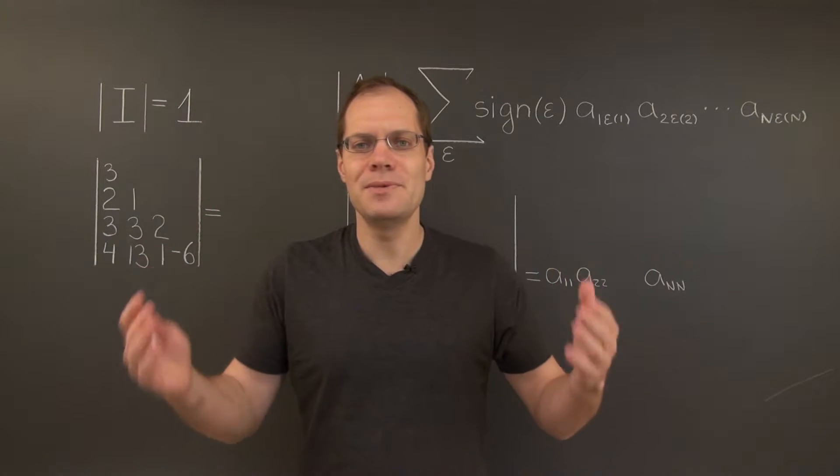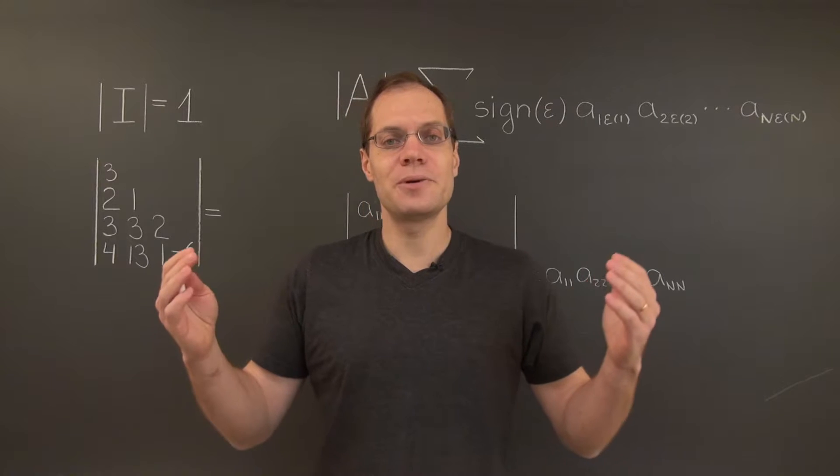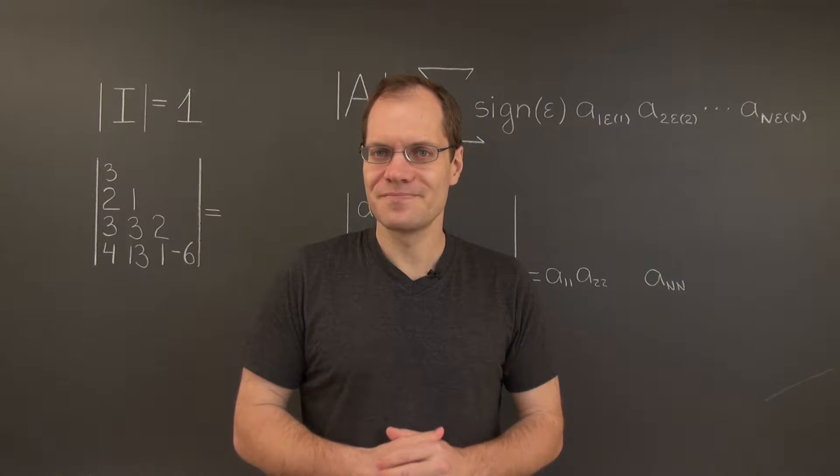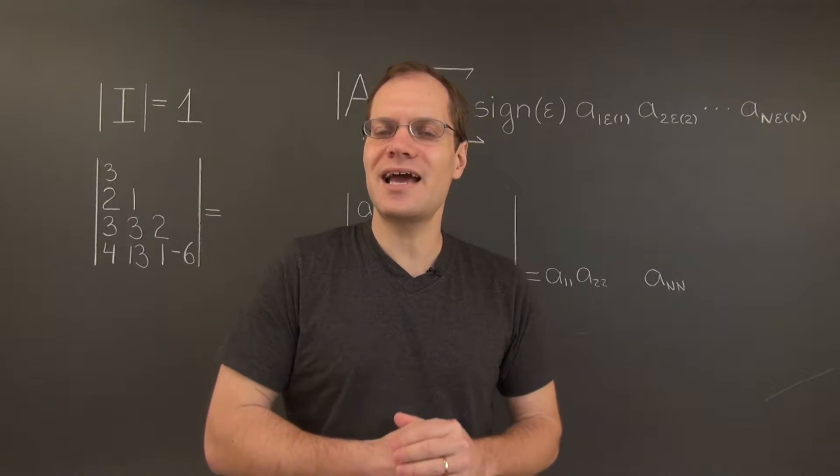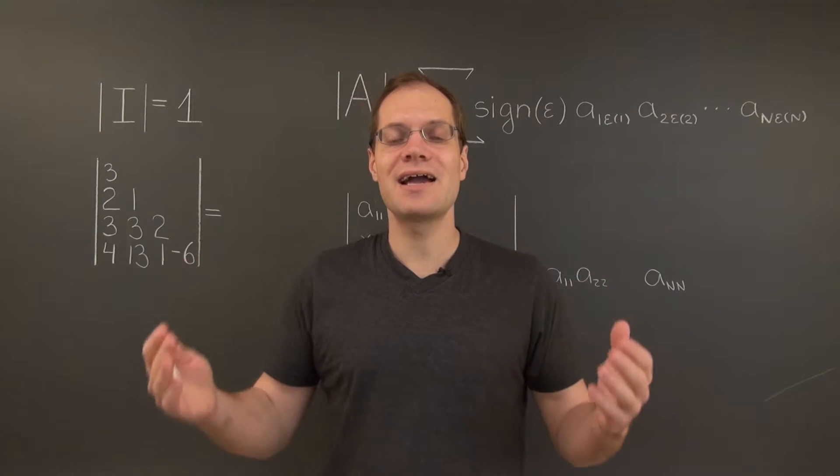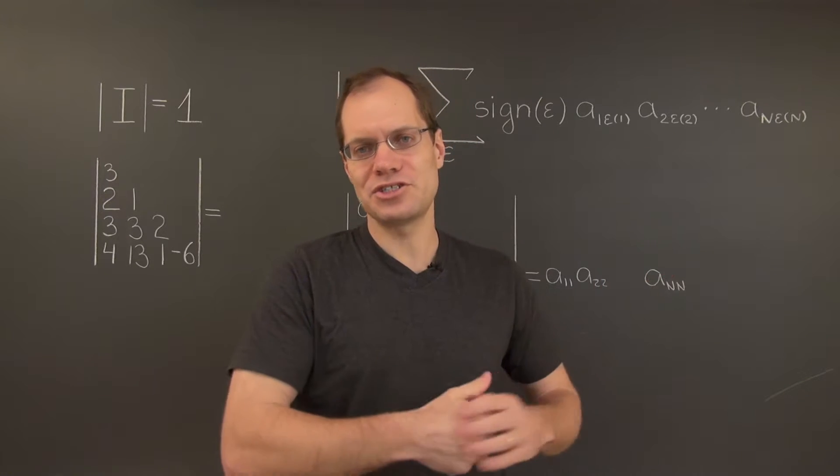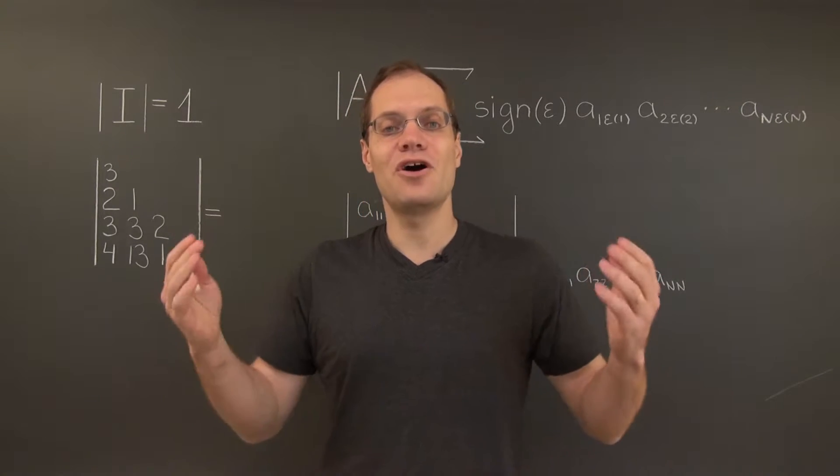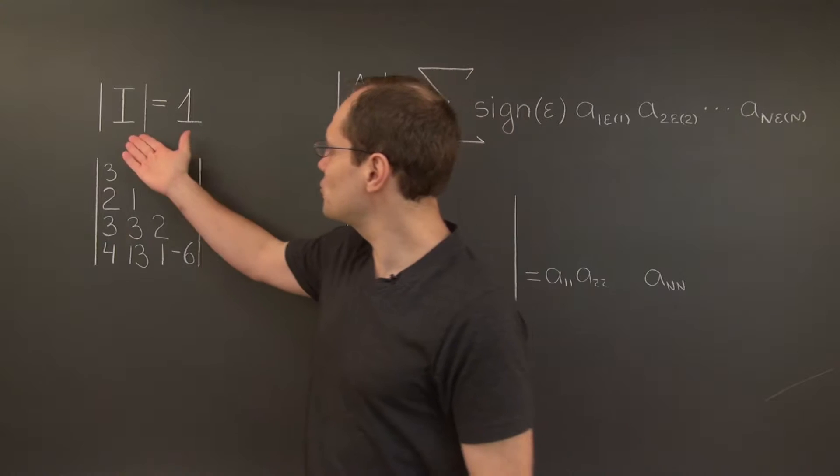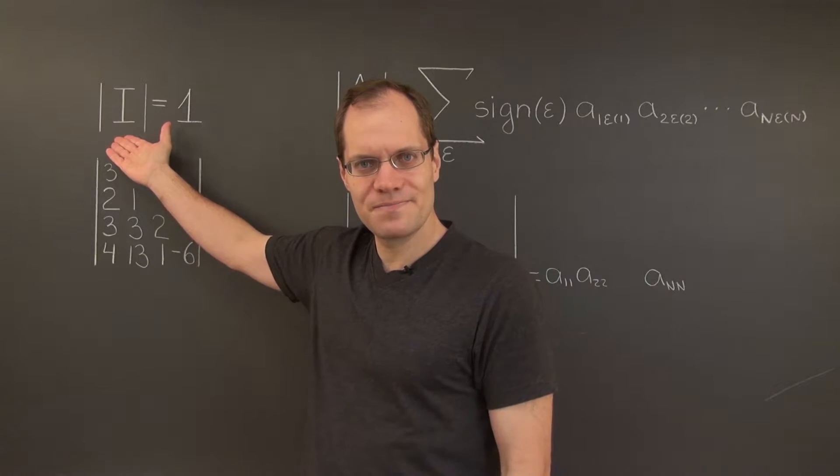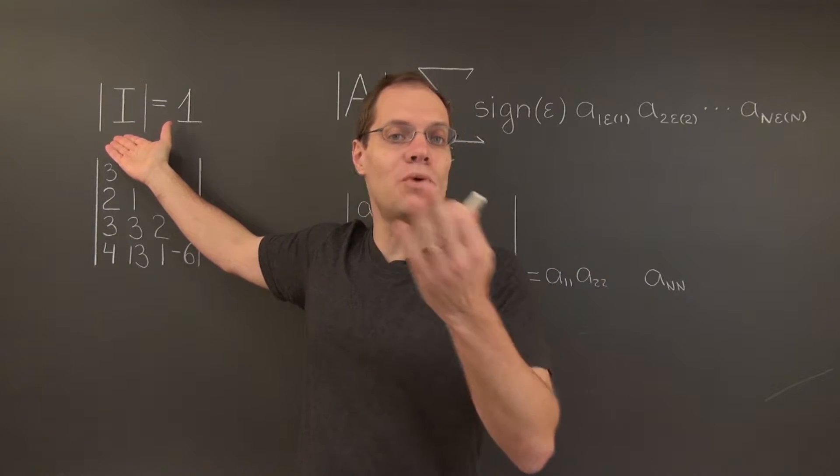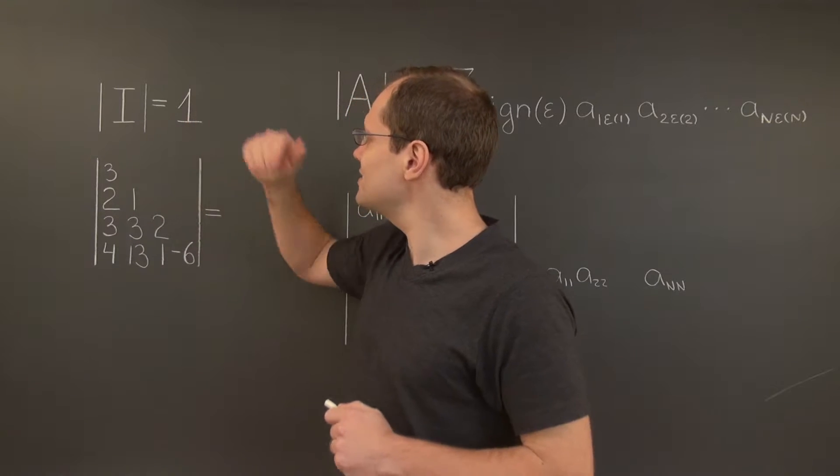And this will immediately imply that the determinant of a diagonal matrix is also the product of its diagonal entries, because diagonal matrices are triangular. In fact, they're both upper and lower triangular. And it will also follow that the determinant of the identity matrix, which is a diagonal matrix with ones on the diagonal, is 1.